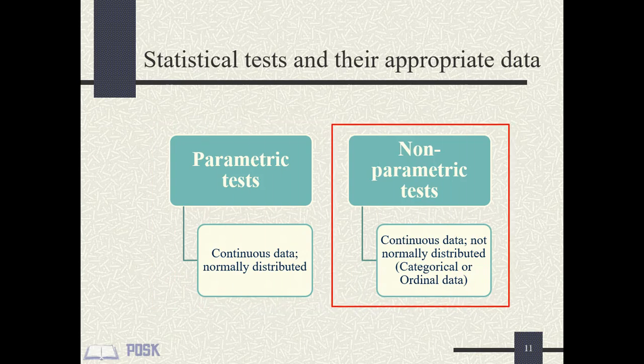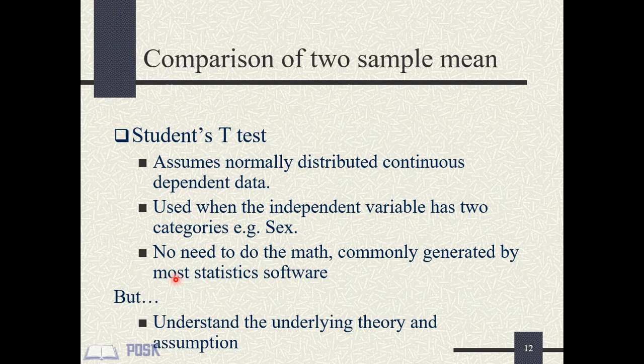If your continuous data is not normally distributed, you can transform it as shown in the last lecture. Non-parametric tests are robust enough to be used for categorical data and continuous data that are not normally distributed. However, they are not nearly as sensitive as parametric techniques, and they are not as easy to interpret.